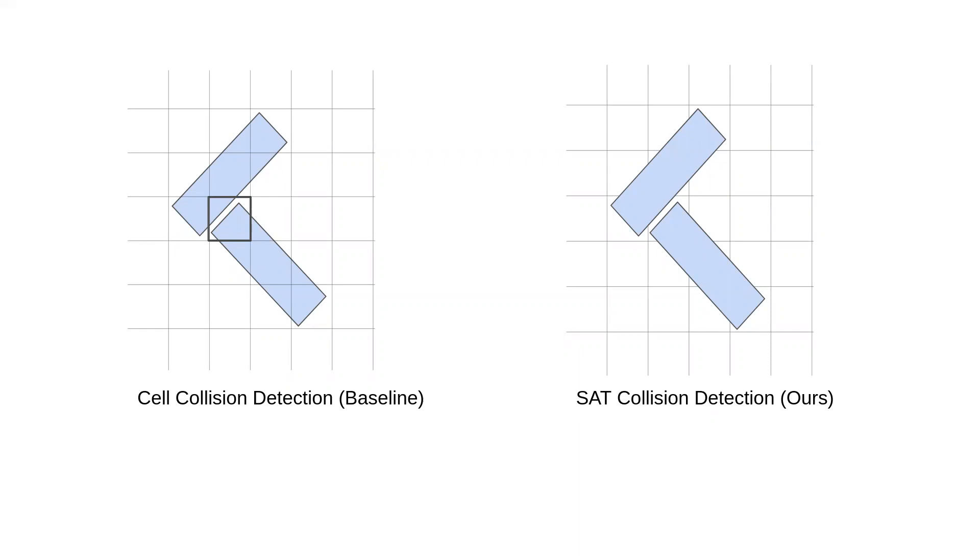As a result, our approach and the cell-based approach detect collisions differently. With the cell-based approach on the left, these agents are said to be colliding because they both occupy the bolded cell. But we can see from our approach on the right that these two agents are not colliding.